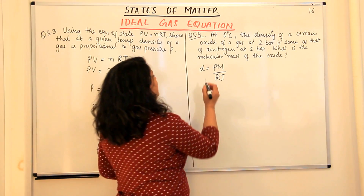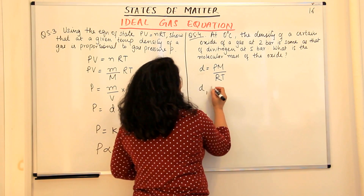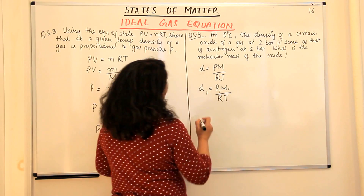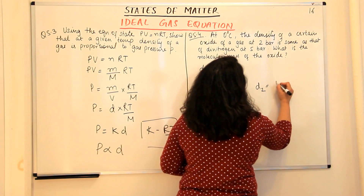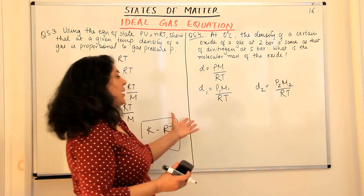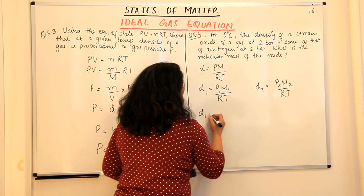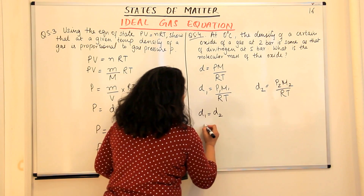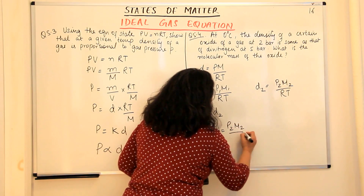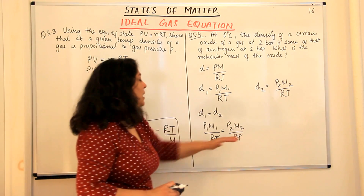Let gas 1 have density D1 and gas 2 (dinitrogen) have density D2. D1 = P1M1/RT, and D2 = P2M2/RT, because R and T are the same for both. There is no need to write T1 and T2, and R is the same. Since RT on both sides is constant and D1 = D2, we substitute: P1M1/RT = P2M2/RT. Since RT appears on both sides, it cancels out, leaving P1M1 = P2M2.